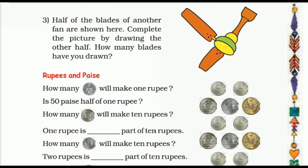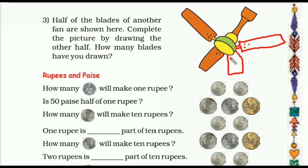Question number three: half of the blades of another fan are shown here. Complete the picture by drawing the other half. That means here half part is drawn and the other half we have to draw. Two are drawn, so we have to draw the other two parts — total four parts. Like that we can complete the picture. And how many blades have you drawn? We have drawn two blades.